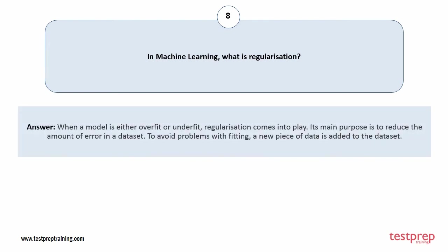Question number eight: in machine learning, what is regularization? When a model is either overfit or underfit, regularization comes into play. Its main purpose is to reduce the amount of error in a dataset. To avoid problems with fitting, a new piece of data is added to the dataset.